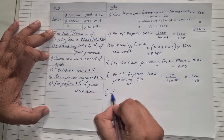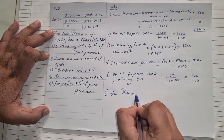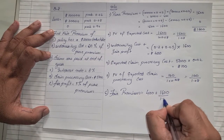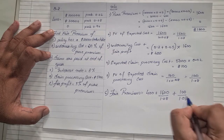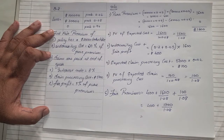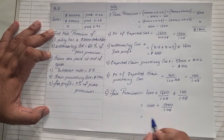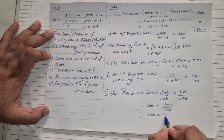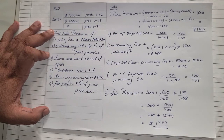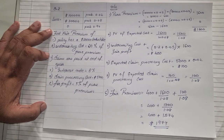Step six: fair premium equals underwriting cost of $400 plus PV of expected claim (1,600/1.08) plus PV of expected processing claim (100/1.08). Adding the two fractions: (1,600 + 100) divided by 1.08 equals 1,700 divided by 1.08, which comes to approximately $1,574. So fair premium equals $400 plus $1,574, giving a final answer of $1,974.